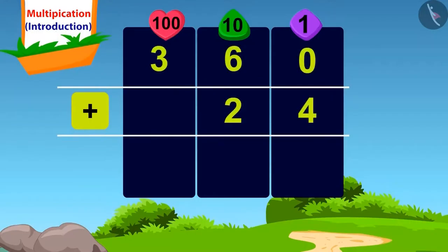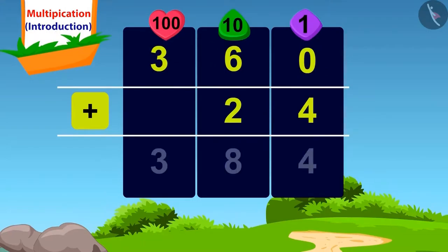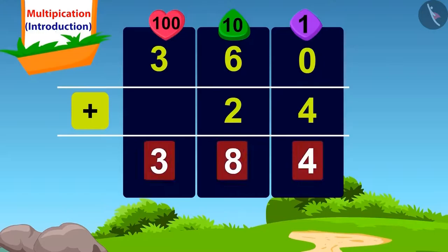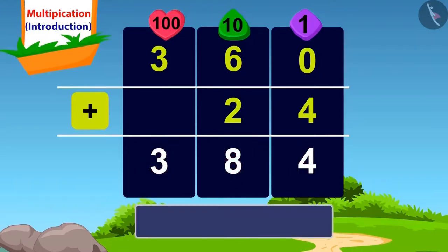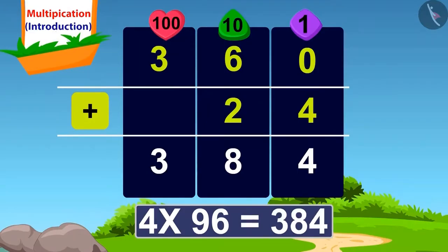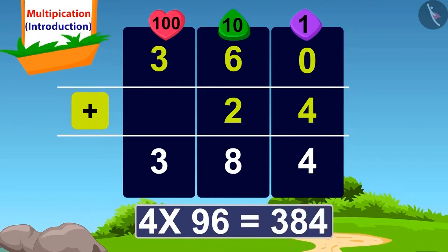Now it is very easy. If we add 24 to 360, what do we get? 384. Doing this, we got the answer to our question: 4 times 96 is 384. A total of 384 ants will be required.